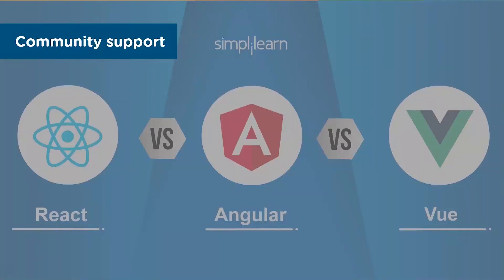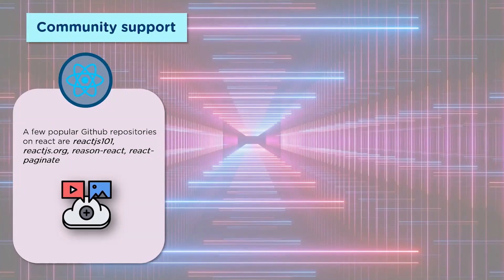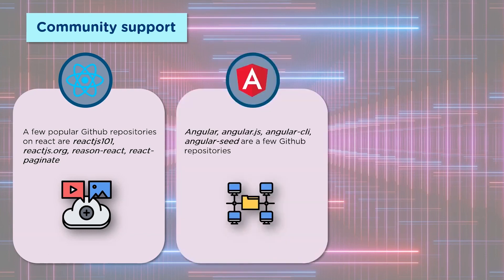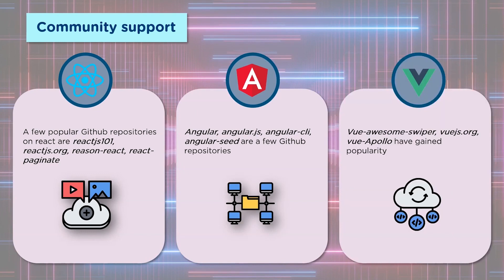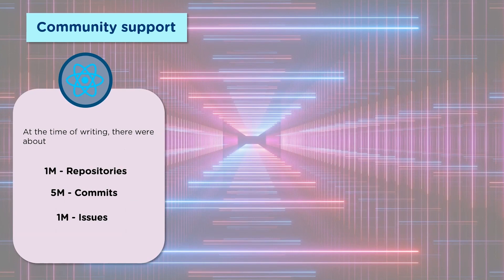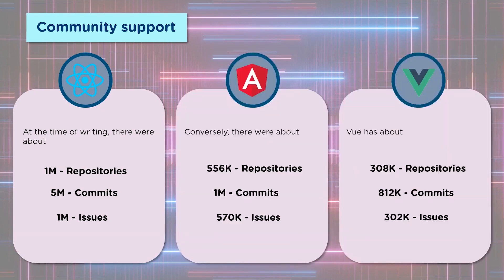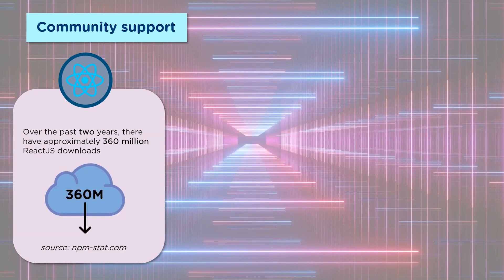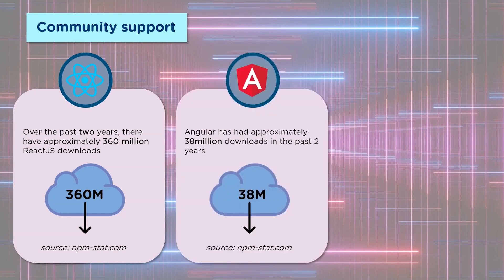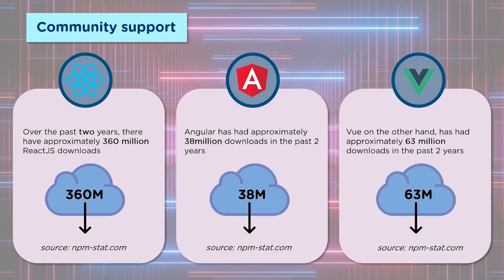Now let's talk about community support. Since all these tools are open source, they have a large developer community. There are popular GitHub repositories for React such as ReactJS101 and ReactJS.org where you can raise queries and connect with the larger community. Angular and Vue also have popular repositories. You can commit, download third-party plugins, and explore these stacks even deeper. At the time of writing, there were about one million repositories, five million commits, and one million issues for React. According to NPMstat, over the past two years there have been approximately 360 million ReactJS downloads, around 38 million for Angular, and around 63 million for Vue.